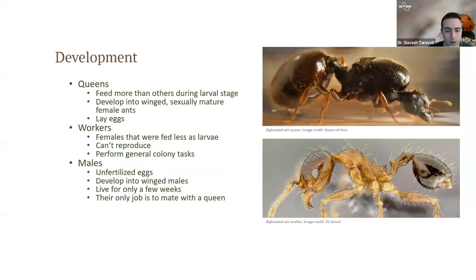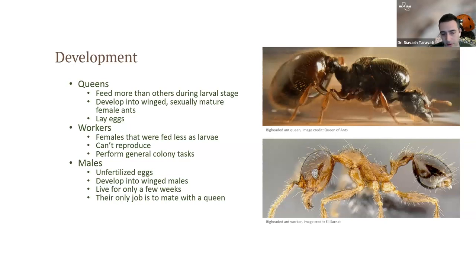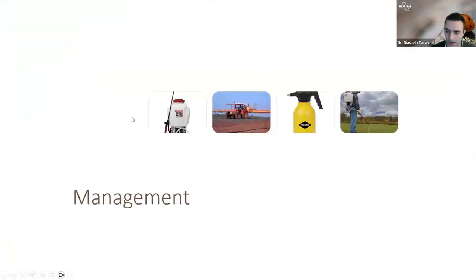Queens develop similarly to workers but are fed more — similar to honeybees. Workers are sterile females. For the most part they can't lay eggs or reproduce, though in some species it's more complex. They can work, defend the colony, and sting. Now let's get into more advanced material — management.